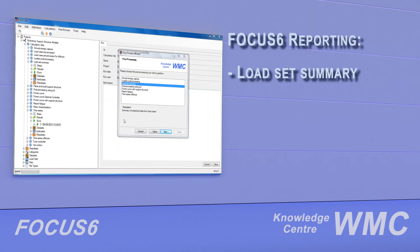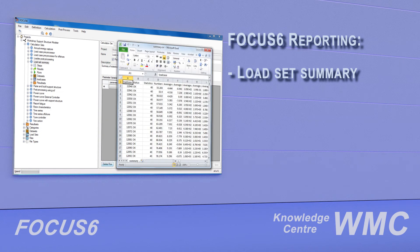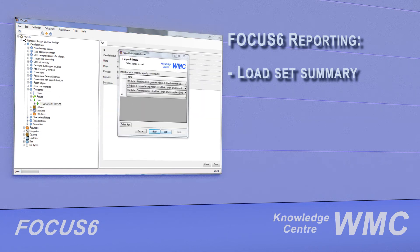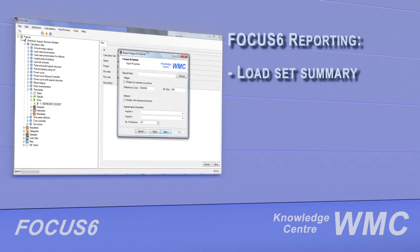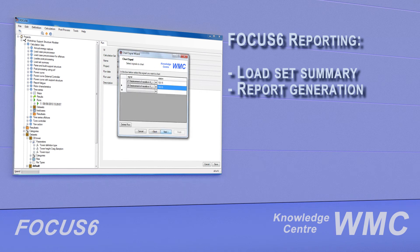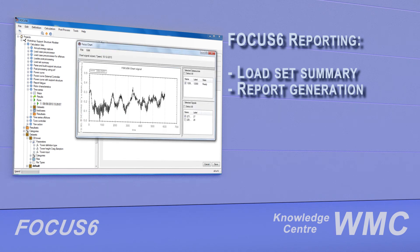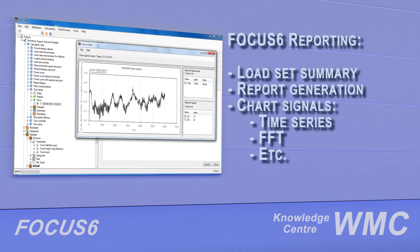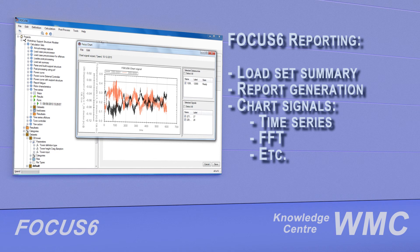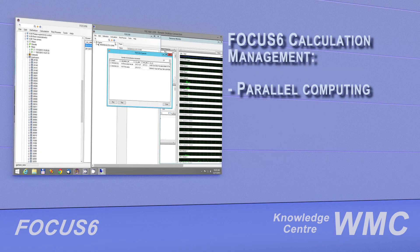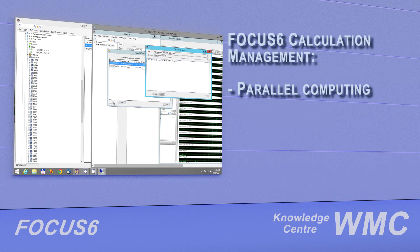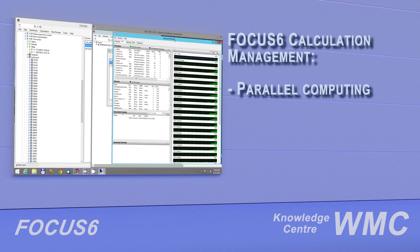The Focus 6 offshore module allows you to speed up the design and certification process for your offshore wind turbine. Its automated reporting features reduce the time required for post-processing and generating reports for certification bodies. Focus 6 offers the option of performing your calculations in parallel on multi-core or multiple processor computers.